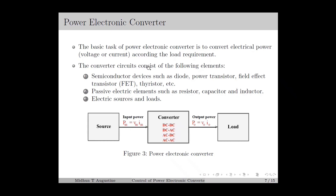The converter circuit consists of semiconductor devices such as diodes, transistors, thyristors, etc., and passive circuit elements such as capacitors and inductors, as well as electric sources and loads. In general, the electric sources and loads are connected externally to the converter circuit, but we consider them as an integral part of the converter and they will be included in the modeling and analysis of power converters.